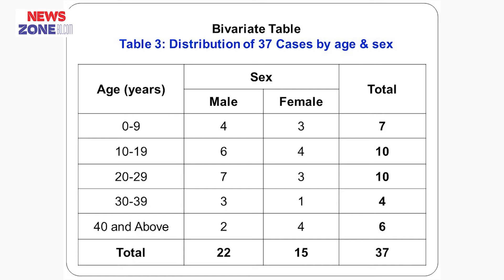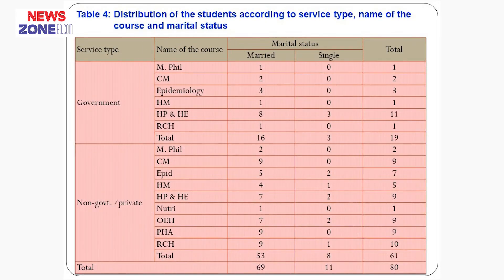This is an example of a bivariate table. Here, sex — male and female — two different columns are used. So it is a bivariate table from the raw data we have seen previously. And here is a multivariate table. It shows multiple variables. Four variables are visible here: service type, name of the course, and marital status in which married and single are two columns available. So this is a multivariate table.